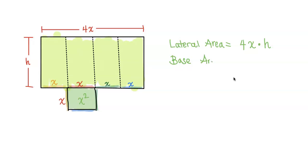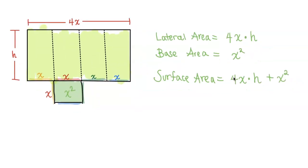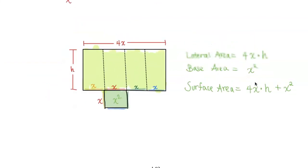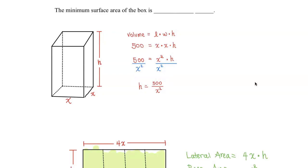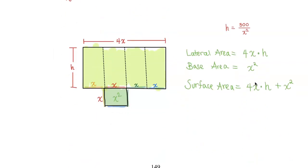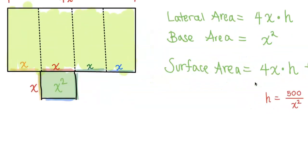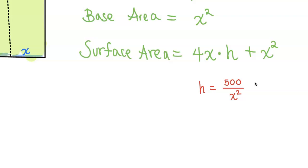The total surface area equals 4xh + x². This formula has two variables, x and h. We already found that h = 500/x², so we'll substitute that into the surface area formula.